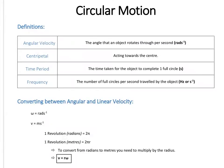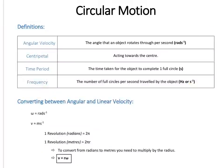Some properties you've come across before when looking at waves in year 12 — just to reiterate them: time period in the context of circular motion is the time taken for the object to complete one full circle, measured in seconds. And the frequency is the number of circles it travels per second, measured in hertz, which is the same as one over seconds in base units.